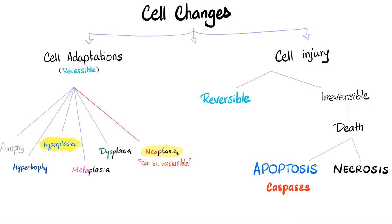Don't forget, neoplasia could be benign or malignant. Malignant is called cancer, and cancer is mostly irreversible unless you treat it, remove it, radiate it, or do whatever. Do some cancers go away on their own? Yes, some of them recede, and no one knows why. Cell injury could be reversible or irreversible. Irreversible cell injury leads to cell death, and cell death is divided into apoptosis or necrosis.